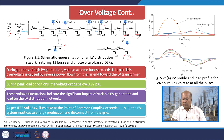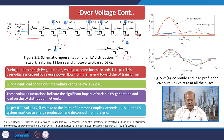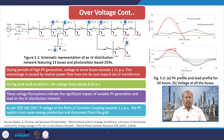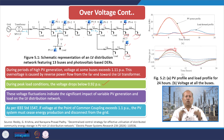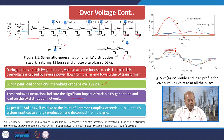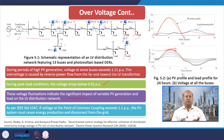The classic load profiles and PV generation profiles are shown, and voltage at each and every bus can easily be calculated. But during the period of high PV generation, voltage at some buses exceeds 1.1 per unit — meaning those buses experience more voltage due to excess PV penetration. And during peak load conditions the voltage drops below 0.92 per unit. This voltage fluctuation indicates the significant impact of variable PV generation and load on the low voltage distribution network.